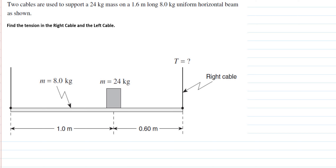Let's take a look at this new equilibrium problem. We have a 1.6-meter long uniform beam with a mass of 8 kilograms, and there is also a 24-kilogram object on the beam. For this problem, we want to find the tension in both the right and left-hand cables.